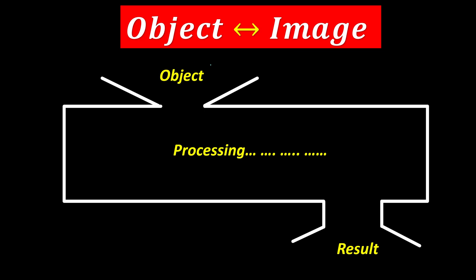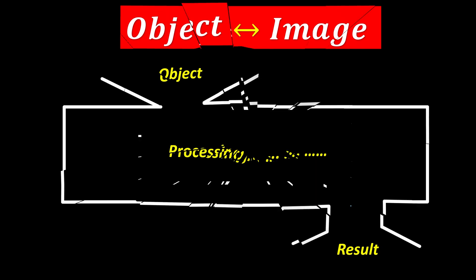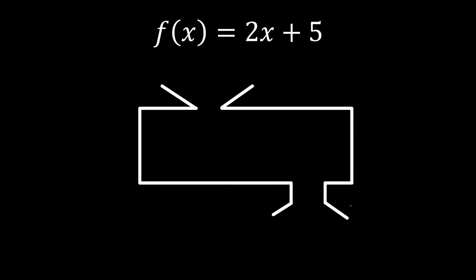Let us explore more about object and image. As we know, object is the individual choice that you choose to be processed, and once we are done processing, we give you back the result. Let us see a more realistic example where we have f(x) = 2x + 5.